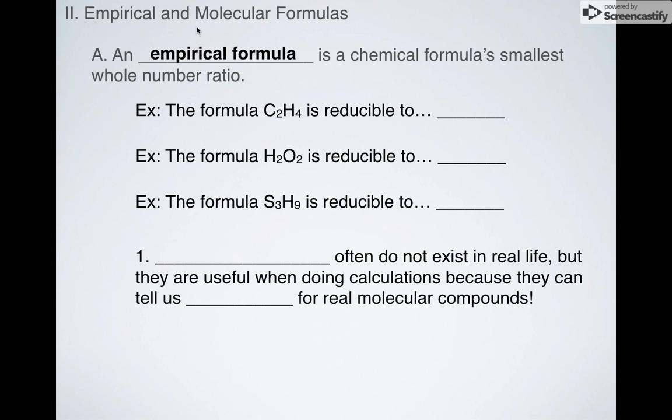So let's take a look at what an empirical formula is and what a molecular formula is. What is an empirical formula? An empirical formula is a chemical formula's smallest whole number ratio. For example, these formulas: C2H4, H2O2, S3H9. If we're looking at the empirical formula of these, you can reduce these. So C2H4 can be reduced to CH2.